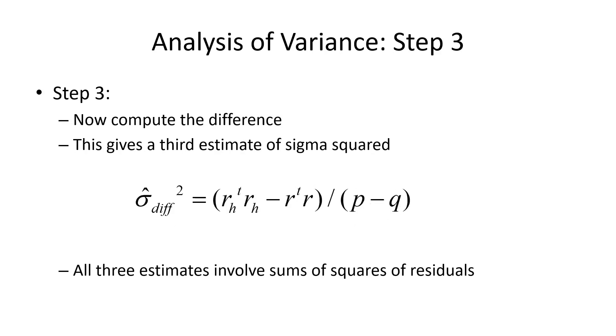Now we have three estimates of sigma squared corresponding to the full model, to the reduced model, and a little bit tricky, taking the difference of the sums of squares residuals and dividing by degrees of freedom.